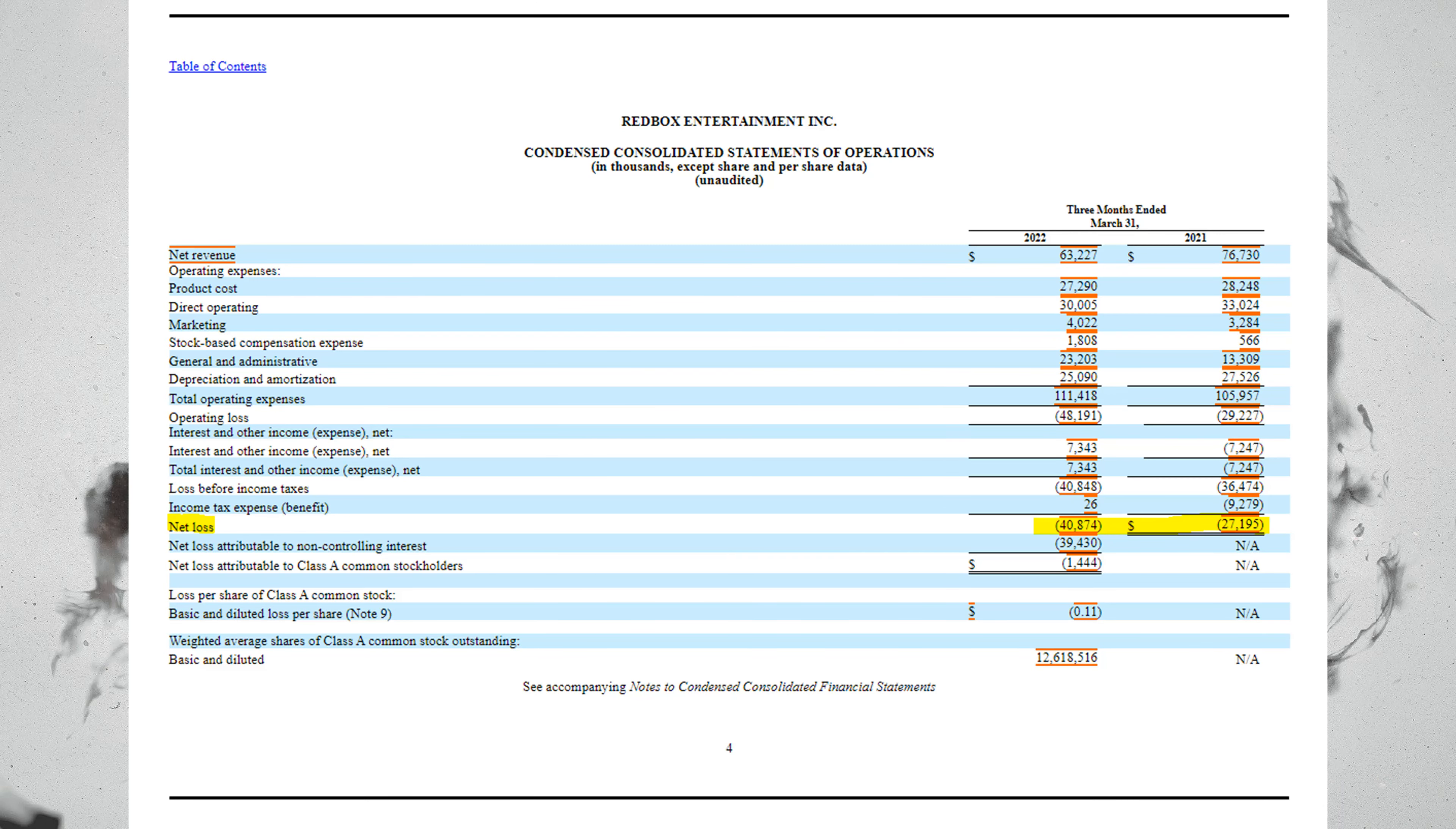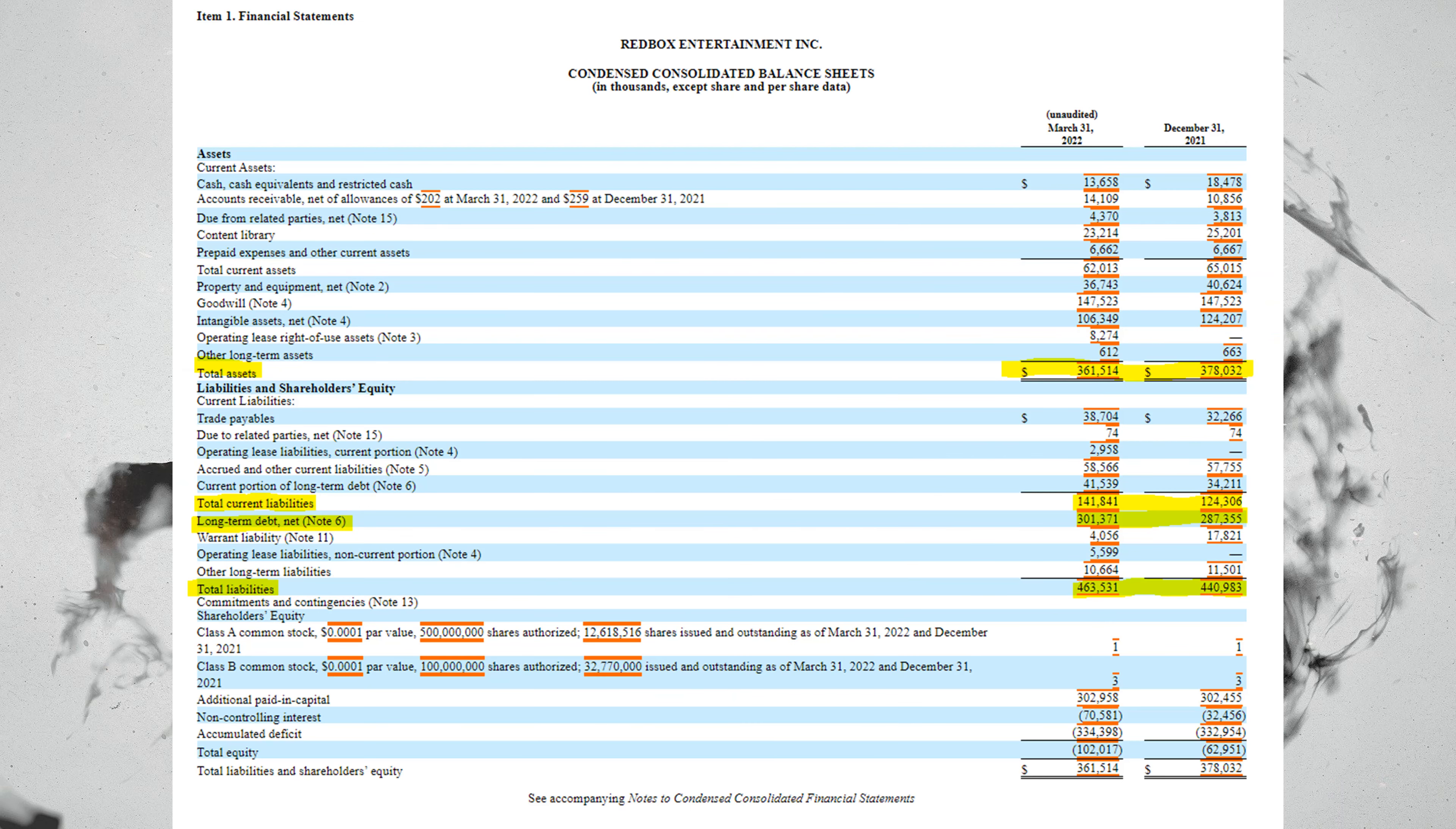In Q1 this year, Redbox lost $40 million as opposed to $27 million for same quarter last year. This obviously isn't good for the company's balance sheet. Total liabilities are greater than total assets, and in fact, the total debt load of the company is almost all of its total assets.